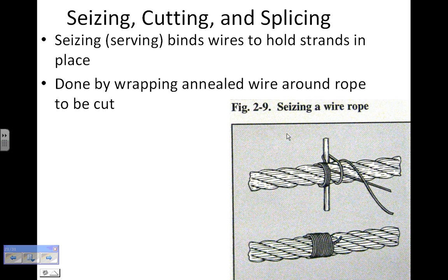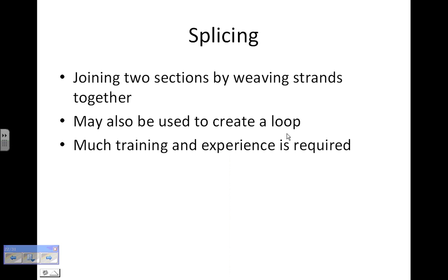If you need to cut one of these, you'll want to make sure the strands are wired into place before doing so. Cutting and splicing are probably things you won't find yourself doing — these are tasks for experienced riggers. The strands can come loose once cut, so you'd bind them using annealed wire. Splicing involves actually weaving strands together, and a great deal of training and experience is required — typically an apprenticeship process with lots of practice.